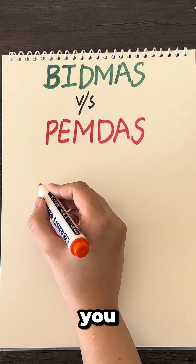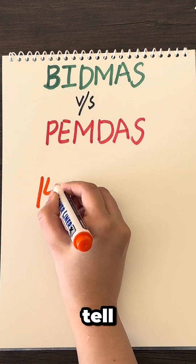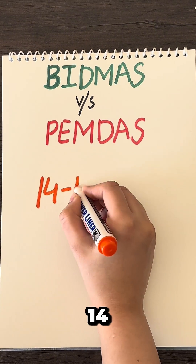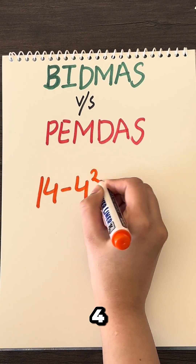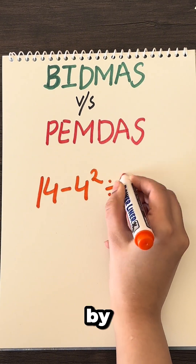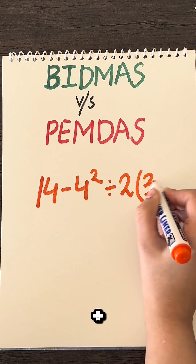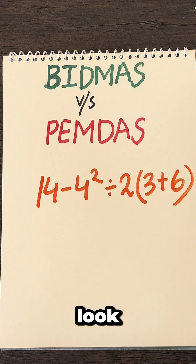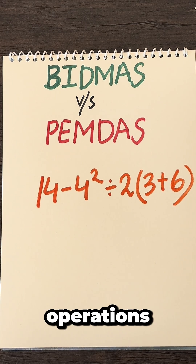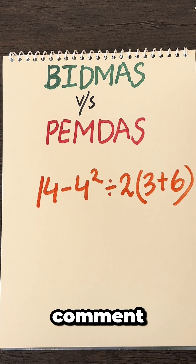Now, for homework, tell me the answer of 14 minus 4 squared divided by 2 into 3 plus 6. Take your time, look at the given laws of operations, and comment your answer below.